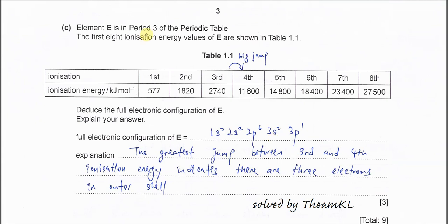Okay, element E in period 3 of the periodic table. Okay, the first 8 IE of the E in table 1.1. So this one, this ionization energy, they are all from the same elements. Means the electrons is going to remove from E one by one. Okay, until 8 electrons removed. Okay, then we need to look for the big jump or the drastic increase in the IE.